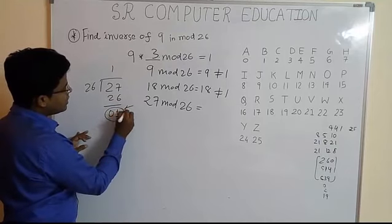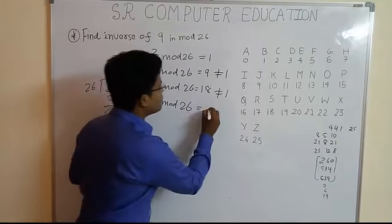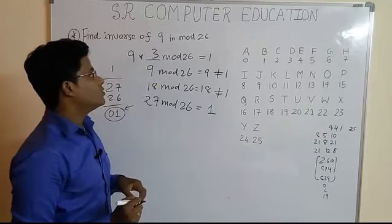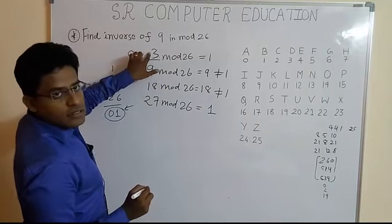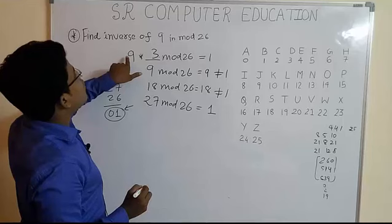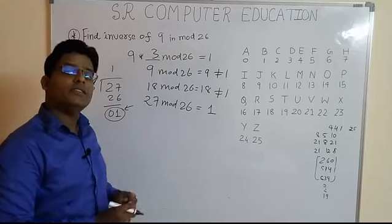Whatever is the remainder that is the answer of your modulus operation. So, here we are getting 1. So, students, 3 is the inverse of 9 in mod 26 operation.